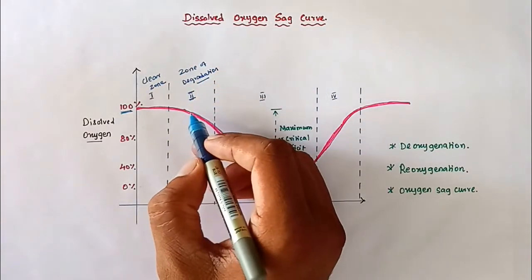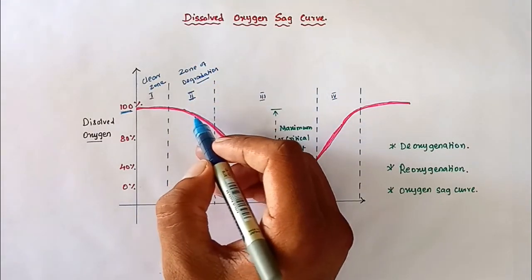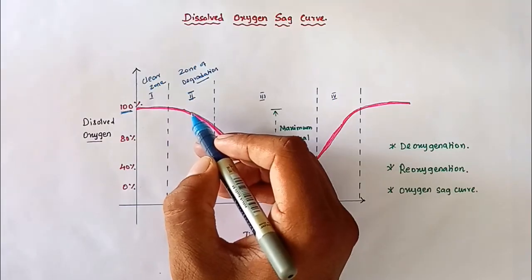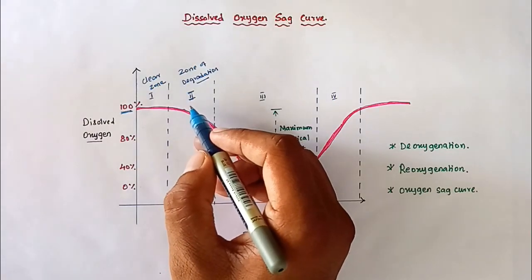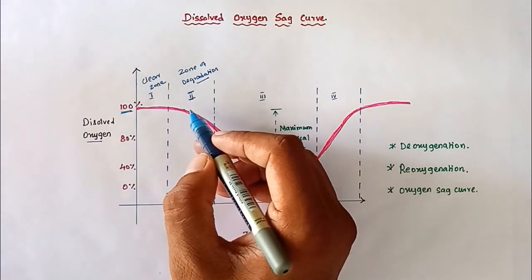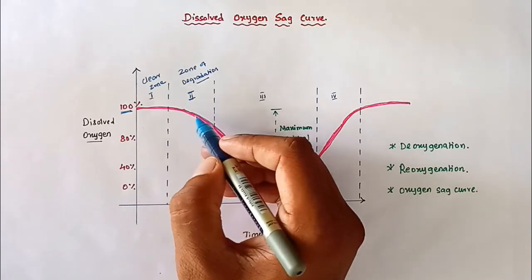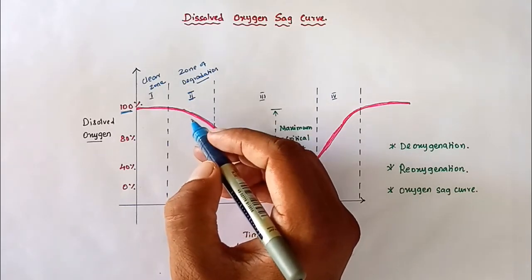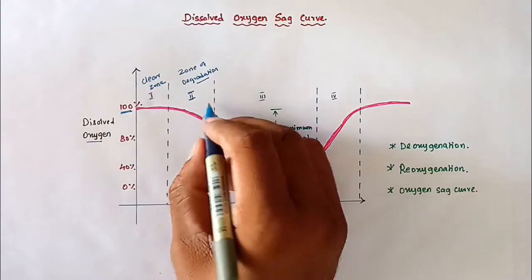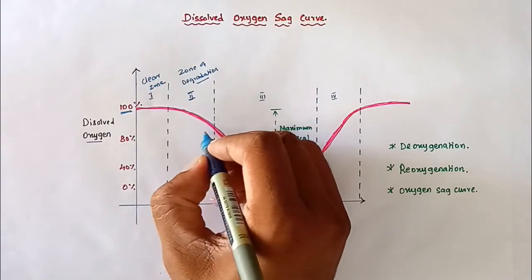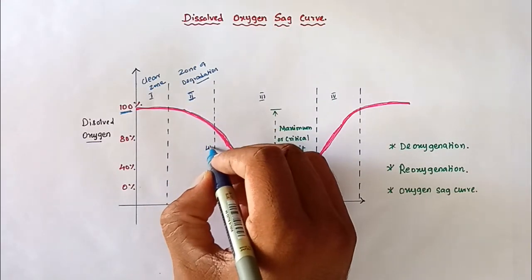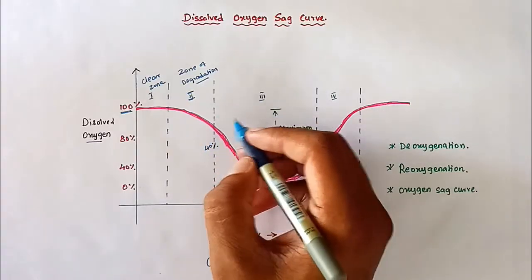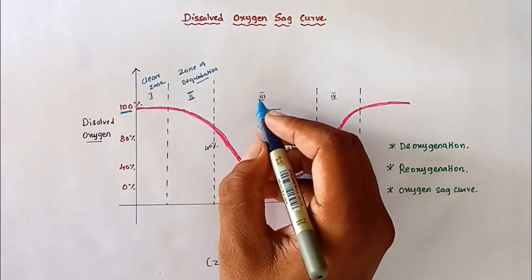The second zone is the zone of degradation. This means the effluent is degraded by biological organisms in the river. The BOD starts rising and the dissolved oxygen will be reduced. In the zone of degradation, the dissolved oxygen level reduces down to 40%.